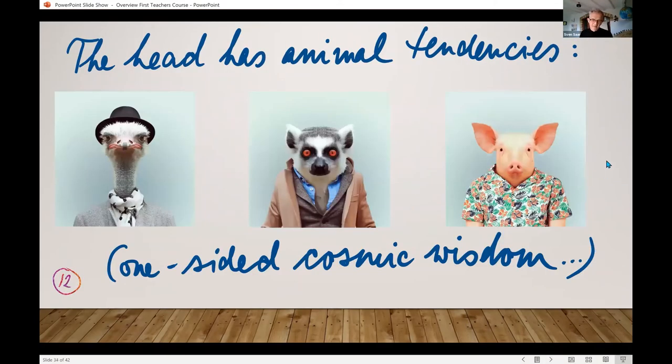Now it gets weird again. In lecture 12, Steiner talks about the human head and explains that we have animal tendencies in us that come to an expression in the way our heads are shaped. No, really. And it's only the other parts of our organization that prevent us from living out our animal tendencies. When I teach this course with lots of time, with teacher training students, we actually look at these images and ask them, what is this person like? What is that person like? I love these images here.